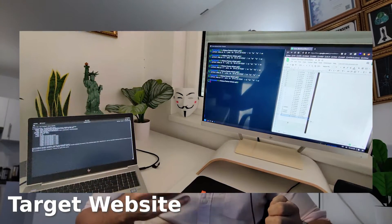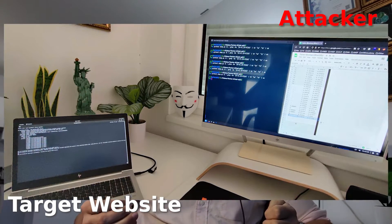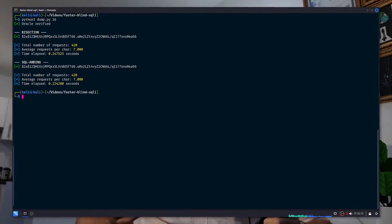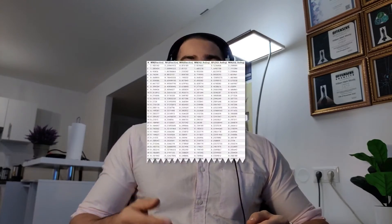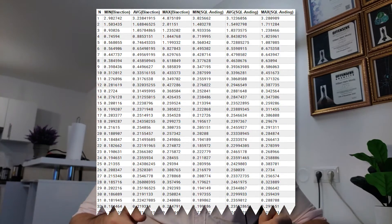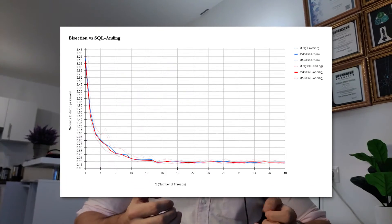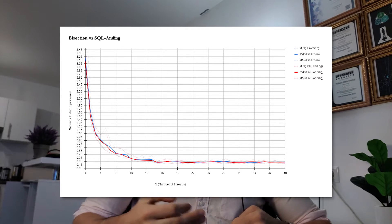To compare the two algorithms, I set up the target website on my laptop and ran a Python script on my desktop PC that times both algorithms dumping the same password. I tested both algorithms 20 times per thread pool size, with pool sizes ranging from 1 to 40. From these times, I calculated the minimum, average, and maximum times per pool size per algorithm and graphed them to be able to visually compare the two. Surprisingly, the curves look almost identical for both algorithms. They both take around 3 seconds to dump a password running on one thread, and they both approach 0.17 seconds as the pool size increases.